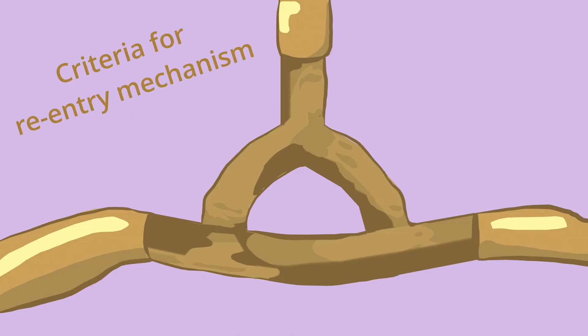Let's begin by looking at the criteria for the re-entry mechanism. The first criteria is that we have a loop in the conduction system as shown by the illustration.